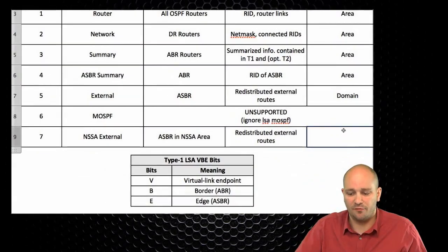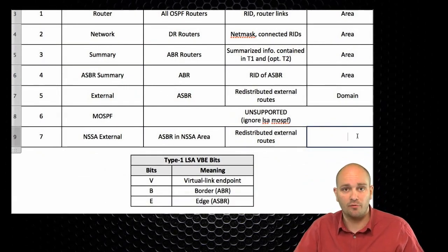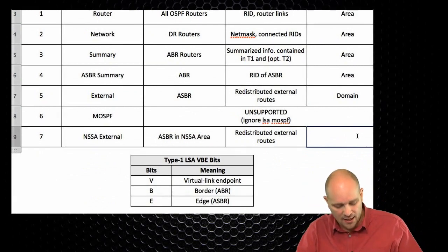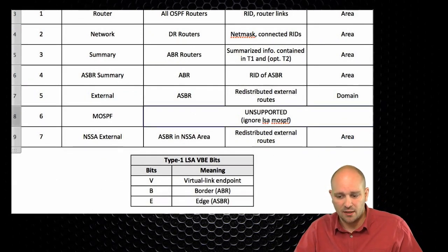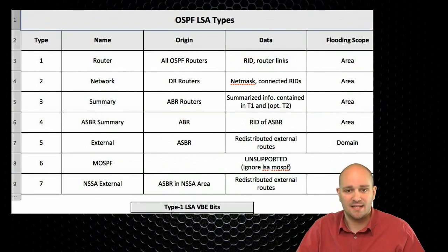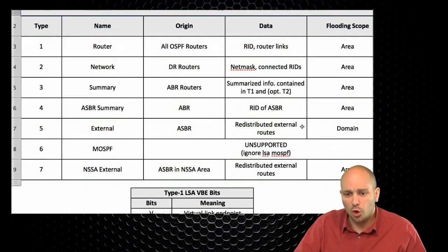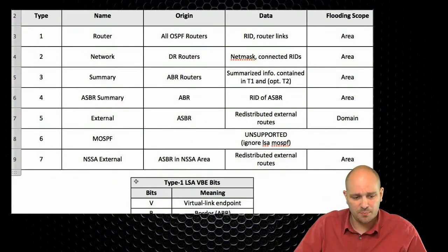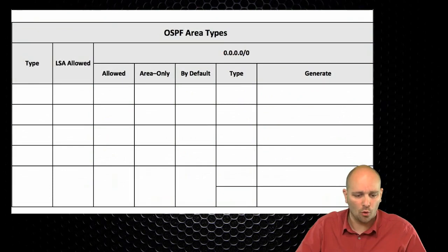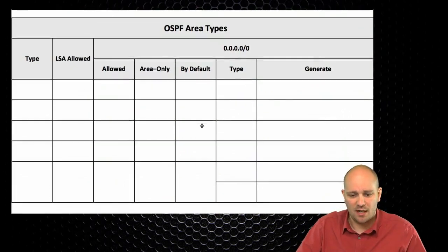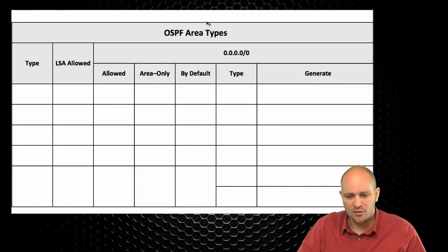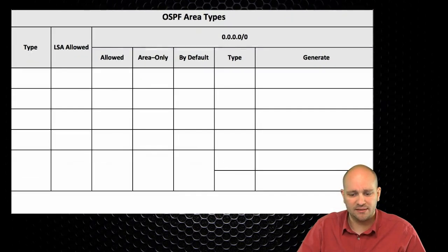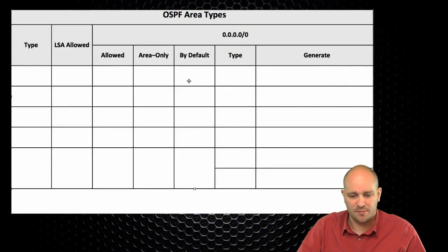The flooding scope for type 7 LSAs is area, just like most other LSAs. This concludes the LSA table, but we have one more table to fill out — the table that deals with OSPF area types.